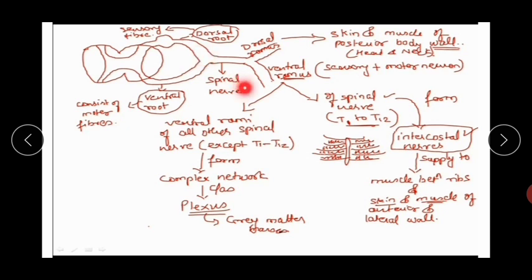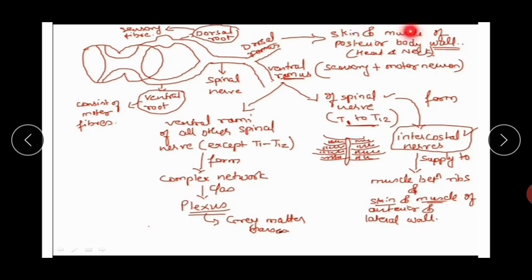The spinal nerves are divided into different branches called rami. The dorsal ramus supplies the skin, muscles, and posterior part of the body including the head and neck. The ventral ramus supplies the front and lateral parts of the body and carries both sensory and motor fibers.